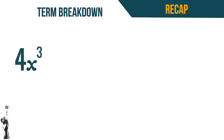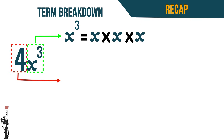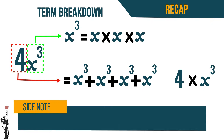Looking at 4x cubed, we see that x cubed represents x times x times x, and the 4 represents x cubed plus x cubed plus x cubed plus x cubed — so essentially we have 4 times x cubed. We also remember that if we have x to the 5 with no coefficient in front of it, it means the coefficient is 1.